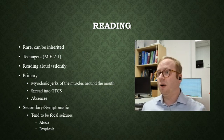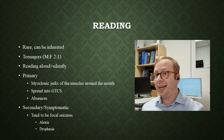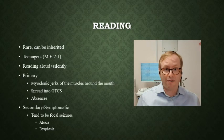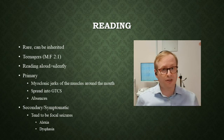Among the cleaner types of reflex epilepsies, reading epilepsy is a very important one. It's rare, can be inherited, and tends to occur in the teenage years, more commonly in males than females. It can occur when people are reading aloud or silently, but more often when reading aloud. Because reading aloud involves a lot of jaw movement, the primary reading epilepsy manifests as myoclonic jerks around the mouth. If people continue to read, this can spread into a generalised tonic-clonic seizure. Patients may also have absences. The secondary or symptomatic type, when there is an underlying brain abnormality, tends to manifest as vocal seizures with alexia or dysphasia.